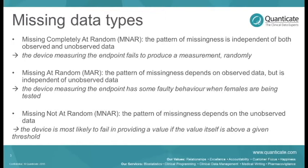Data could be missing at random (MAR), which is a slightly more strict situation where the fact that the data is missing is totally and completely explained by the data which we have observed. The example I've given here is that the device which measures the endpoint has some faulty behavior when females are being tested, so we know that the subject being a woman completely gives us all the information we need to say whether the measurement is going to be missing or not.